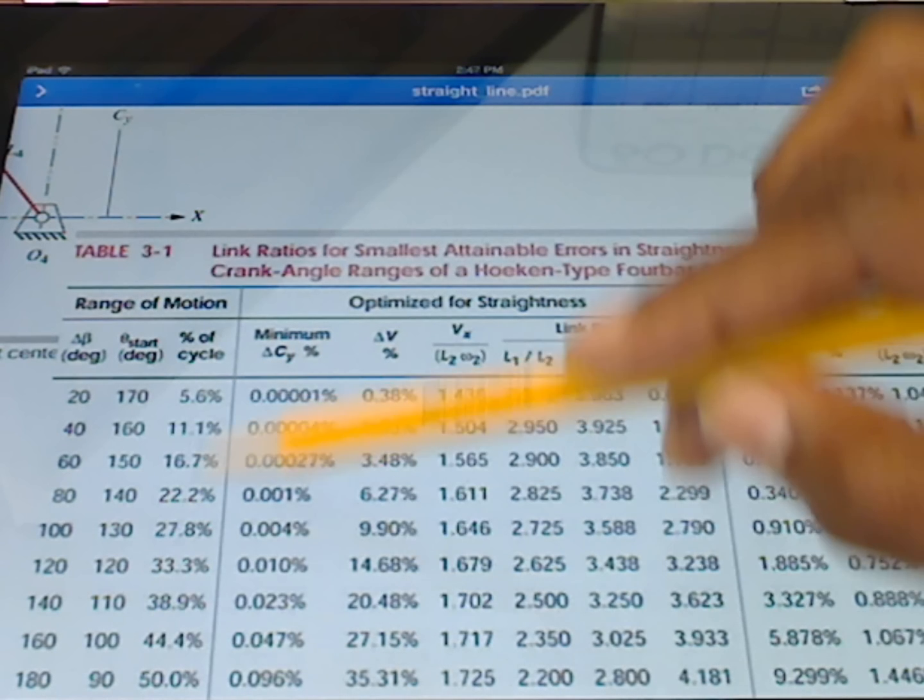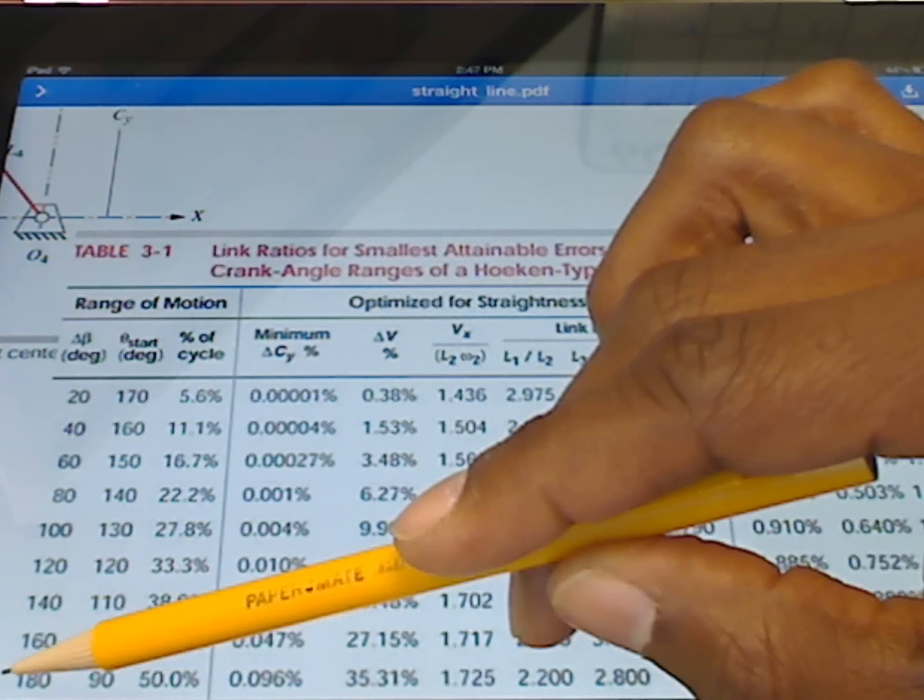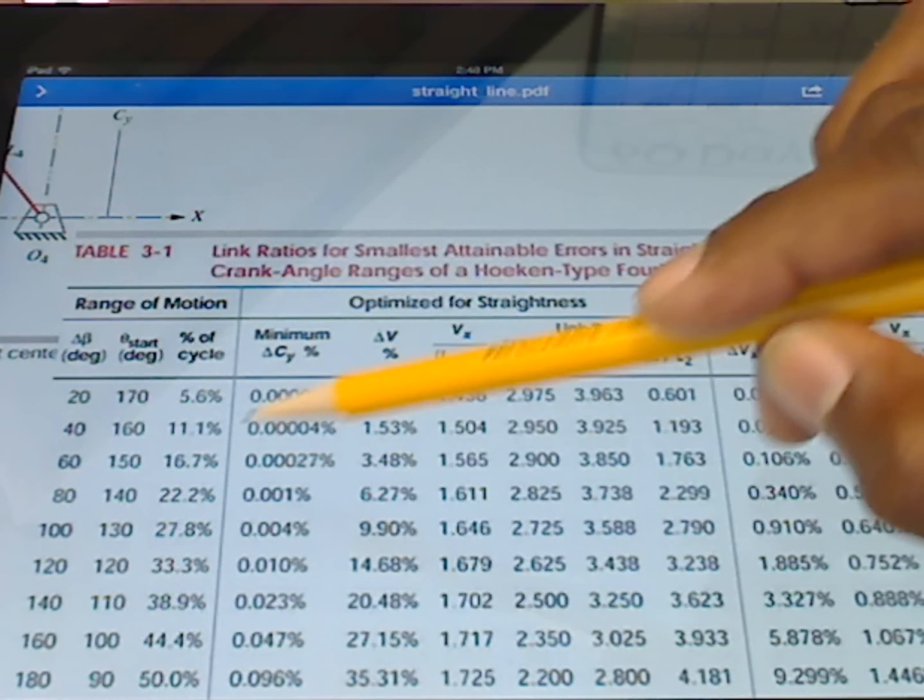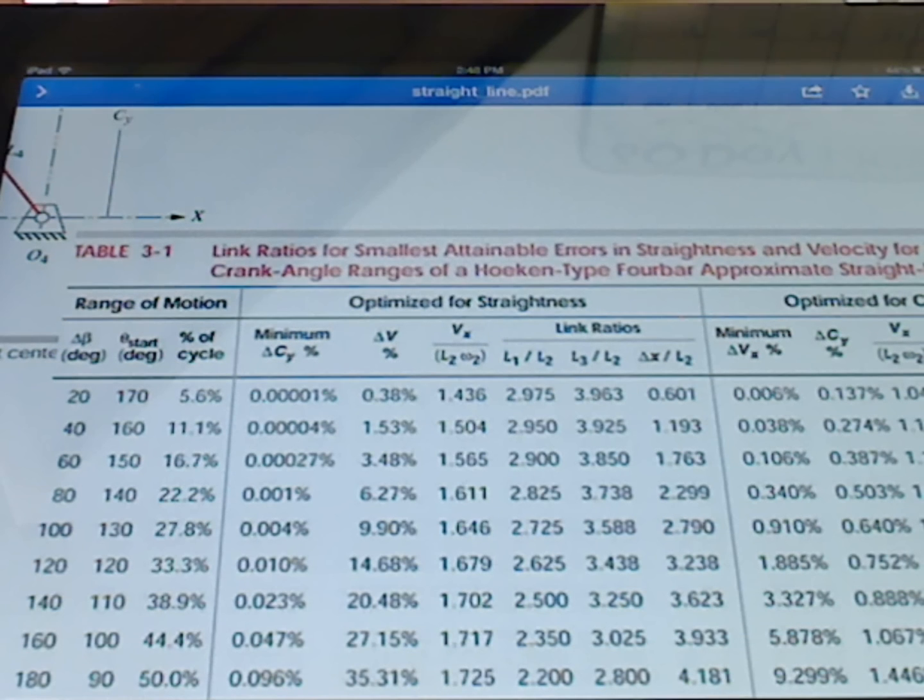And of course, the percentage of cycles. So how much of that's going to be straight? So of course, if there's 180 degrees of crank rotation, that's 50% of the crank cycle will be part of the straight portion.